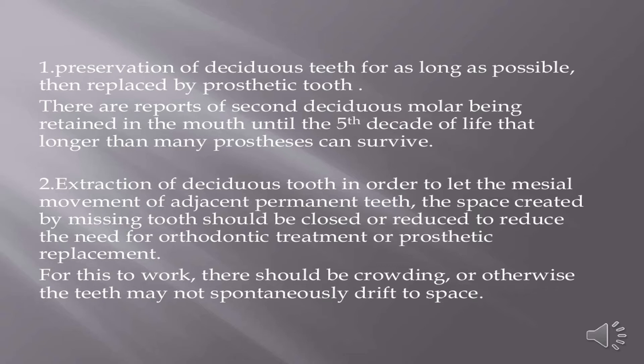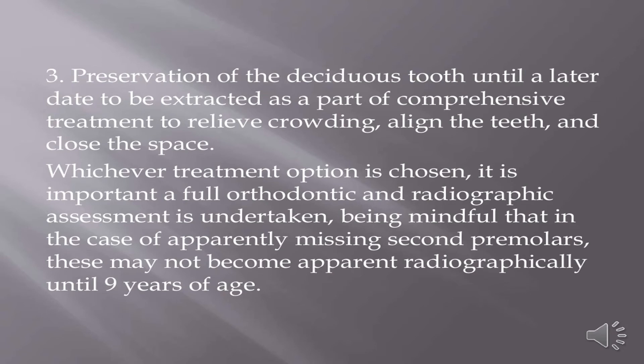A second option is extraction of the deciduous tooth to allow mesial movement of adjacent permanent teeth, with space closure or reduction to reduce the need for orthodontic or prosthetic replacement — though this requires crowding, as teeth may not spontaneously drift otherwise. A third option is preservation of the deciduous tooth until a later date, to be extracted as part of comprehensive treatment to relieve crowding, align teeth, and close space. Whichever option is chosen, a full orthodontic and radiographic assessment is important, noting that apparently missing second premolars may not become apparent radiographically until 9 years of age.